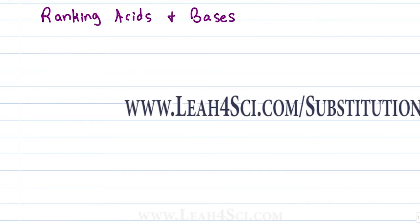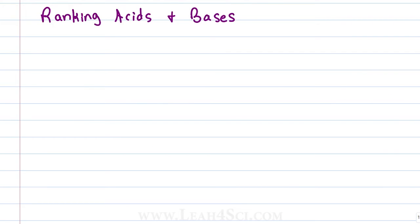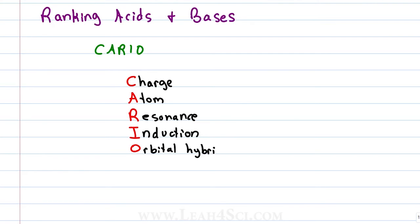When it comes to ranking the strength of acids and bases, some professors will provide a pKa table and most will not. Does this mean you have to memorize pKa values? No, instead this means you have to understand the basic CARIO principles that I teach in the acid base series linked below to help you rank the molecules based on what you see rather than based on a number that you memorized. As a reminder, CARIO stands for charge of the atom, the atom that we're comparing, resonance stabilization of the atom, induction or the inductive effect and orbital hybridization specifically of the acidic or basic atom.